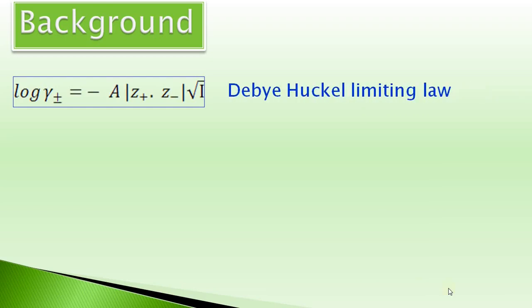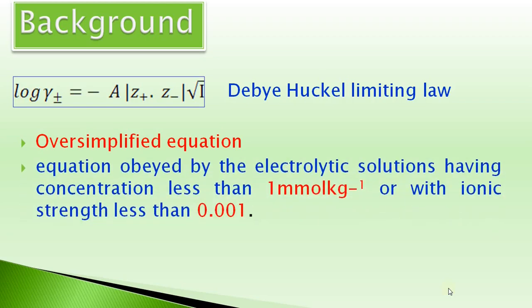This equation is called a limiting law because while deriving this equation things are oversimplified. It has been consistently assumed that these approximations are applicable only when dilute solutions are there and their dilution approaches to infinity. This equation is not expected to hold good for concentrated solutions. Practically, this equation has been substantiated by data obtained for electrolytic solutions having concentrations less than 1 mmol per kg or with ionic strength less than 0.001.